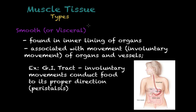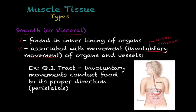The last type is smooth muscle tissue, also known as visceral muscle tissue. This is the type of tissue found in the inner lining of organs, associated with involuntary movement of organs and vessels. Involuntary movement is the opposite of voluntary movement found in skeletal muscle — no thought is needed to trigger it. In contrast, with skeletal muscle you can use thought to contract the muscles, such as closing your hands or moving your legs.